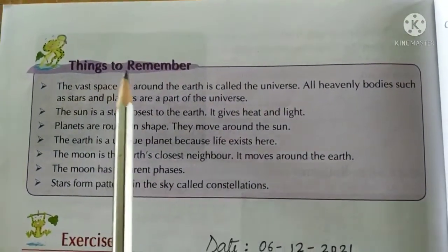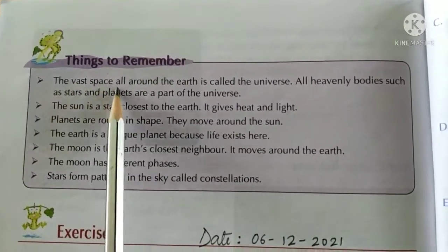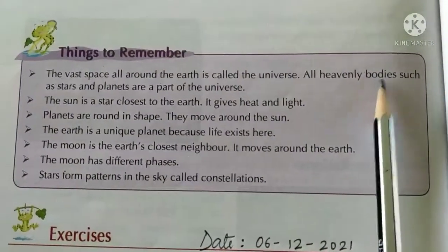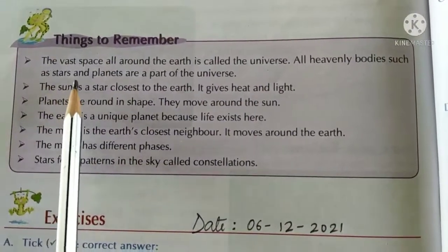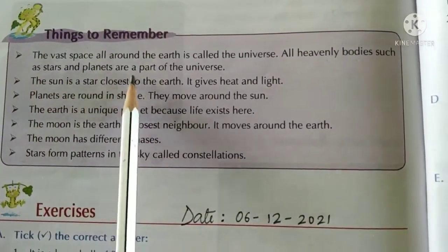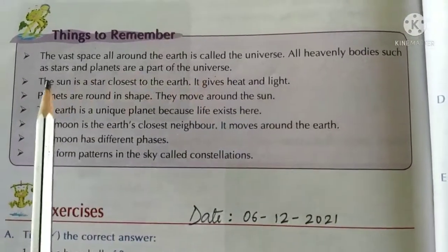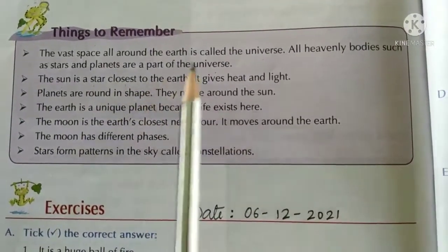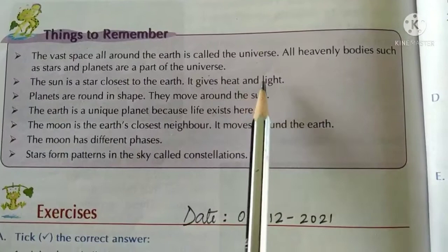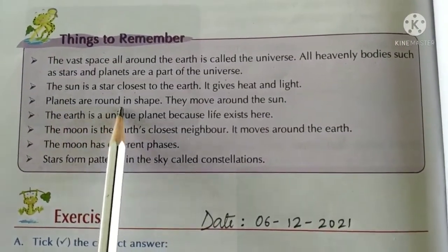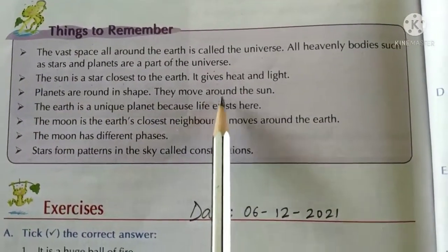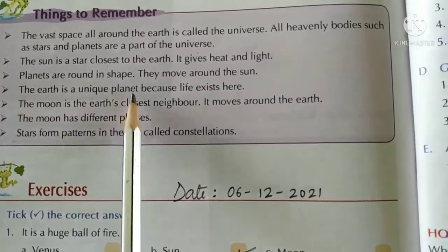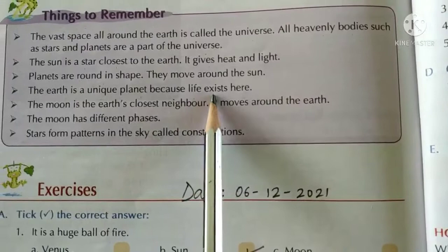The things to remember are: the vast space all around the earth is called the universe. All heavenly bodies such as stars and planets are part of the universe. The sun is the star closest to the earth. It gives heat and light. Planets are round in shape and move around the sun.